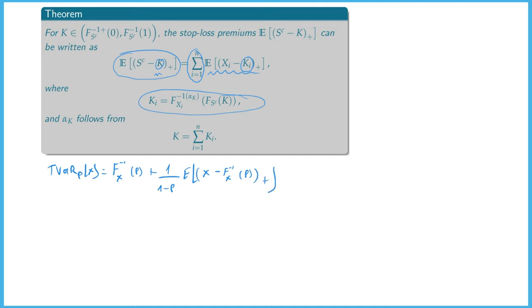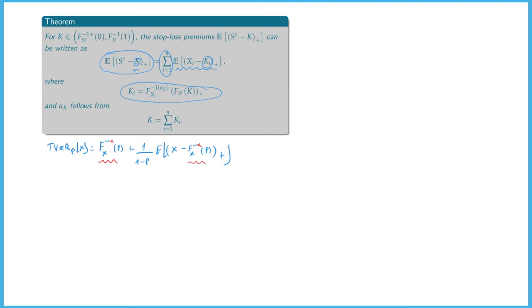We had a proof for this result, and now we will prove that this result remains to hold if instead of having F_X^{-1}(p) in the stop-loss premium, we put an alpha there. So the tail value at risk can be written with the normal inverse — the value at risk — but also with the alpha inverse. Let us first give this proof. We start with the stop-loss premium X minus F_X^{-1,alpha}(p).